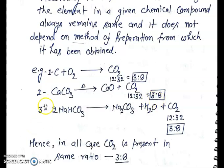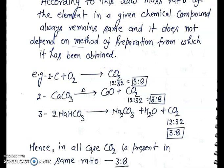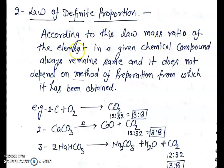In the third method, on heating sodium bicarbonate to give sodium carbonate, water, and carbon dioxide, the mass ratio of carbon and oxygen is again 12:32, and the simple mass ratio of carbon and oxygen is 3:8. Hence, in all cases, carbon dioxide is present in the same ratio, that is 3:8. So this follows the law of definite proportion, because the mass ratio of the elements in the given chemical compound — that is, carbon dioxide — always remains the same and does not depend on the method of preparation.